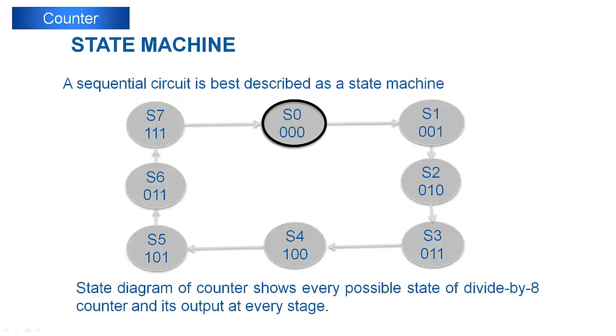A sequential circuit is best described as a state machine. Our 3-bit counter has 8 unique outputs, so we can describe it as a state machine having 8 unique states starting from S0 and going up to S7. This state machine can predict the next state at every current state and then at incoming input, the counter can move to the next predicted state.